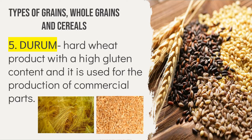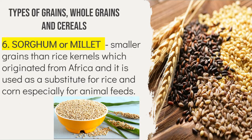Another type of grain is durum wheat — a hard wheat product with a high gluten content used for the production of commercial pasta. Durum wheat, also called pasta wheat or macaroni wheat, is the second most cultivated species of wheat after common wheat, representing only 5–8% of global wheat production. Sorghum or millet has smaller grains than rice kernels, originated from Africa, and is used as a substitute for rice and corn especially for animal foods. Sorghum is nutrient-packed, rich in B vitamins, magnesium, potassium, iron, and zinc, and is an excellent source of fiber, antioxidants, and protein.